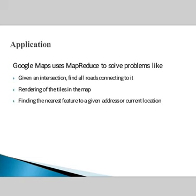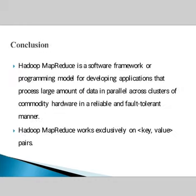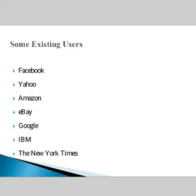An application of this is using Google Maps with MapReduce — for example, finding the nearest feature to a given address or current location. Some existing users of Hadoop include Facebook, Yahoo, Amazon, eBay, Google, IBM, and The New York Times.